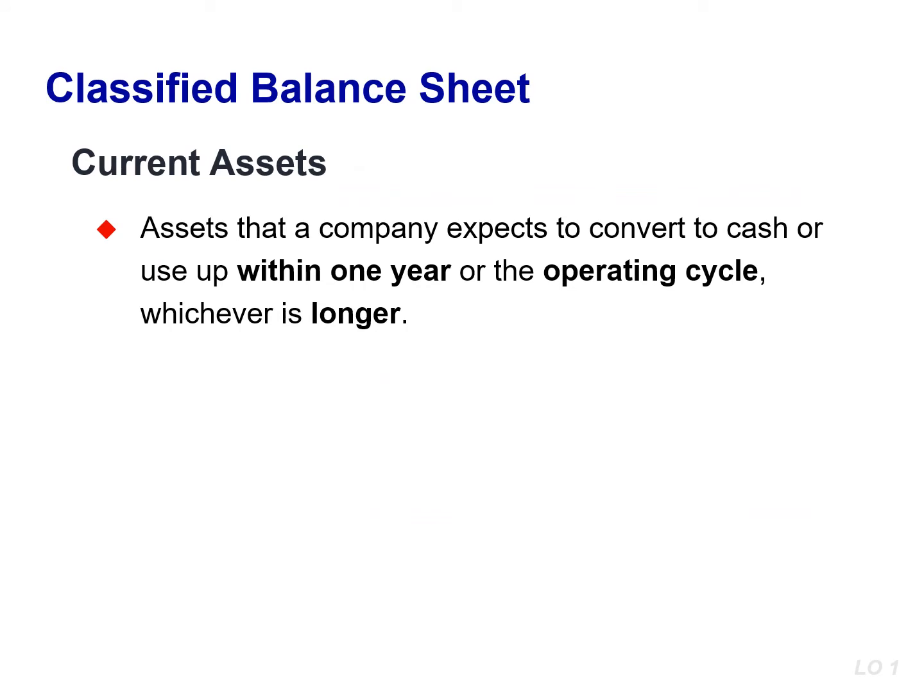Current assets are assets that a company expects to convert to cash or use up within one year or its operating cycle, whichever is longer. Franklin Corporation had current assets of $22,100. For most businesses, the cutoff for classification as a current asset is one year from the date of the balance sheet. For example, accounts receivable are current assets because most companies expect to collect them within one year. Supplies is also a current asset because the company expects to use the supplies in operations within one year.